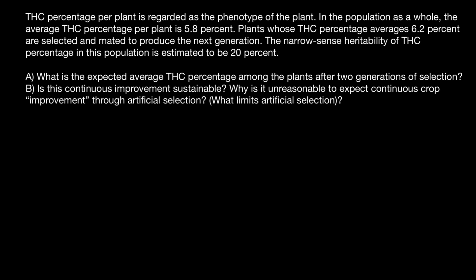Here's the problem. THC percentage per plant is regarded as a phenotype of the plant. In the population as a whole, the average THC percentage per plant is 5.8%. Plants whose THC percentage averages 6.2% are selected to produce the next generation. The narrow-sense heritability of THC percentage in this population is estimated to be 20%.